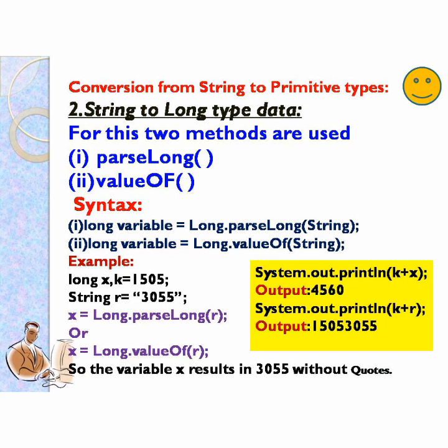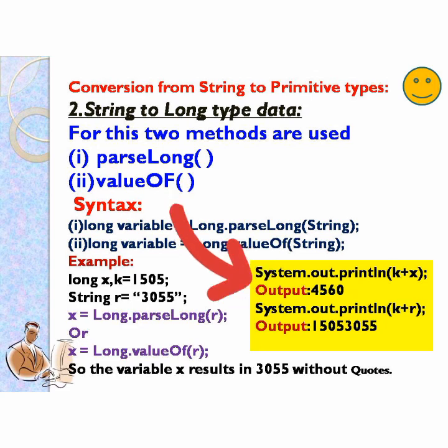Now System.out.println(k + x): k is long and x is also long, so long plus long gives you an integer value — the result is 4560. If you type System.out.println(k + r) then you get concatenation, so the output will be in string format. That is how you convert string to long.